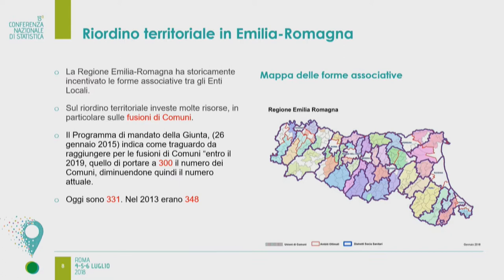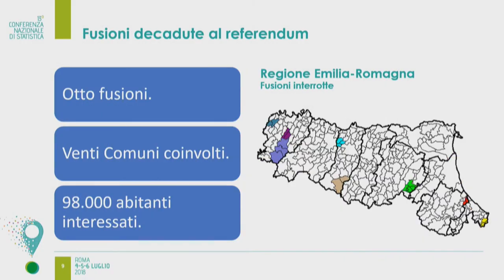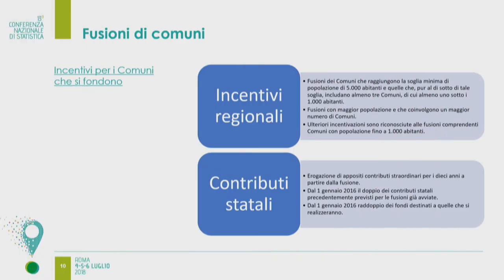L'idea era quella di portare a 300 il numero dei comuni, dai 348 che erano, entro il 2019. Adesso siamo a 331 e non credo che arriveremo a 300, perché le fusioni dei comuni devono essere sottoposte a referendum per la Costituzione italiana. Ci sono state 8 fusioni che coinvolgevano 20 comuni e 98 mila abitanti che hanno detto no. Perso il referendum, la fusione non si fa. Comunque 17 comuni sono scomparsi, quindi il bilancio non può essere considerato certamente negativo.